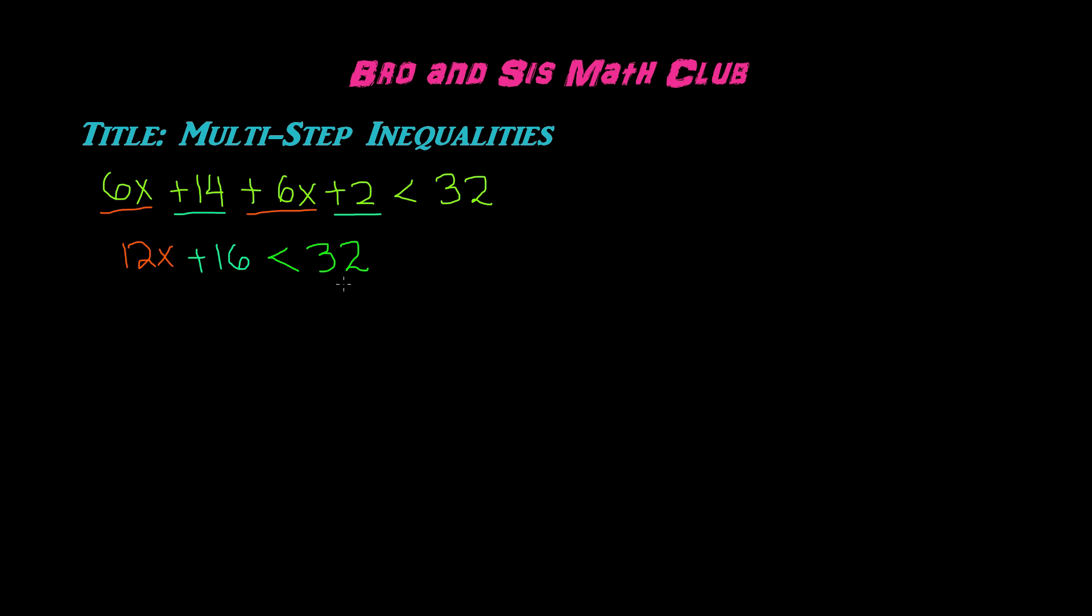The next step is to isolate the variable. Like when you're solving a multi-step equation, what you're trying to do is find the value of the variable by isolating it. So whatever is happening to the variable, you're going to use inverse operations to undo that operation.